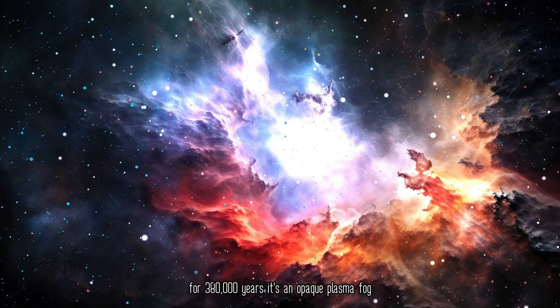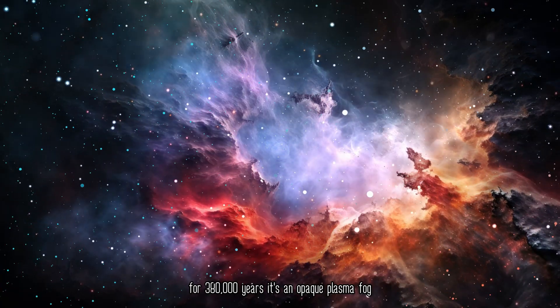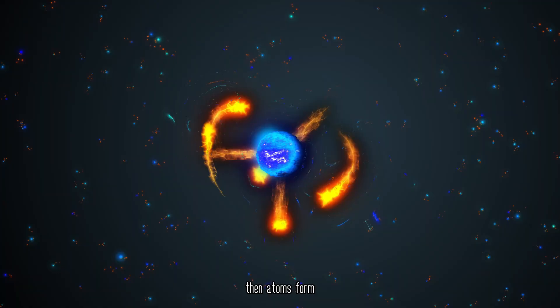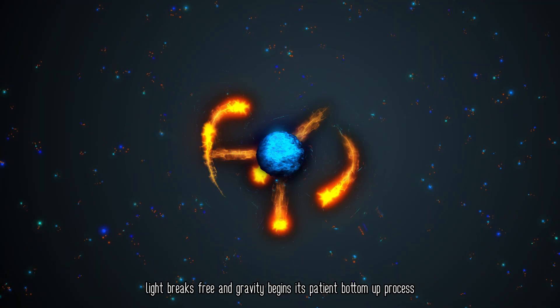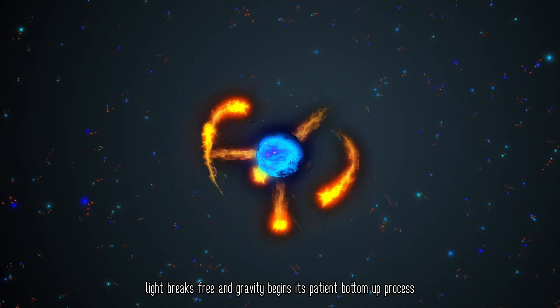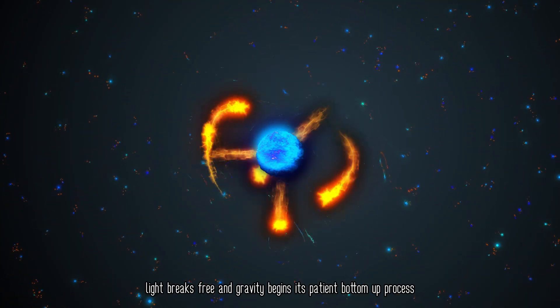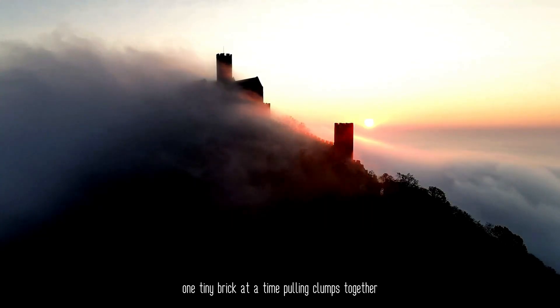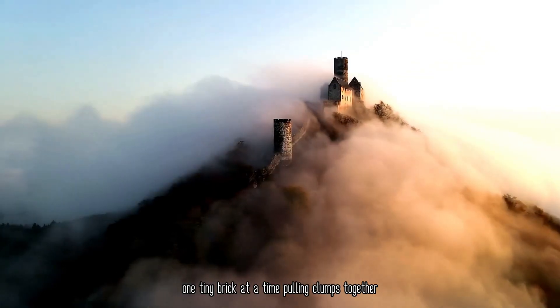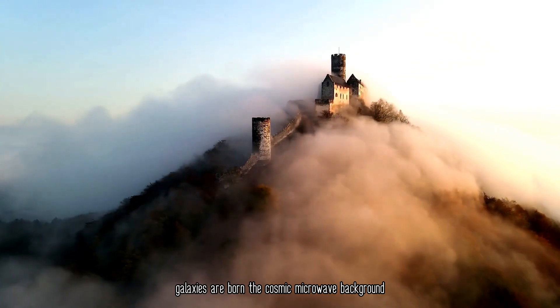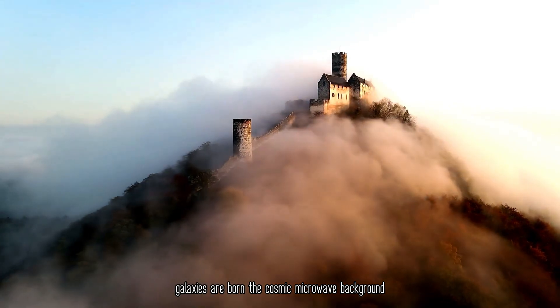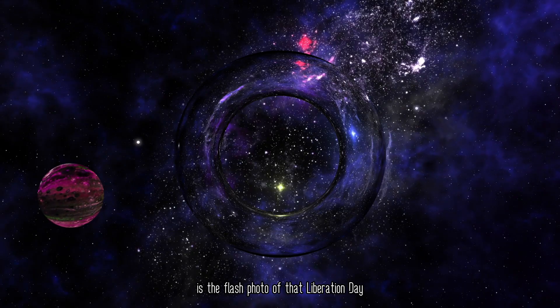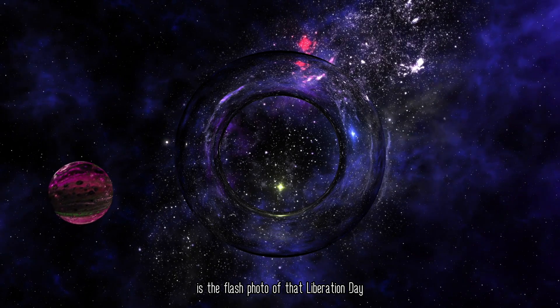For 380,000 years, it's an opaque plasma fog. Then atoms form, light breaks free, and gravity begins its patient, bottom-up process. It's like building a Lego castle, one tiny brick at a time, pulling clumps together. Galaxies are born.